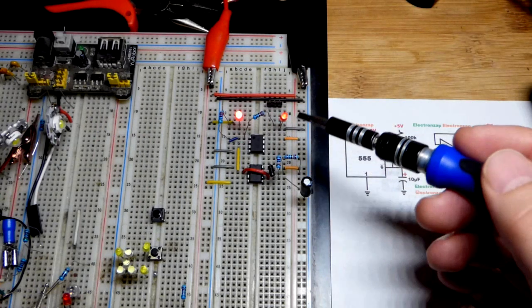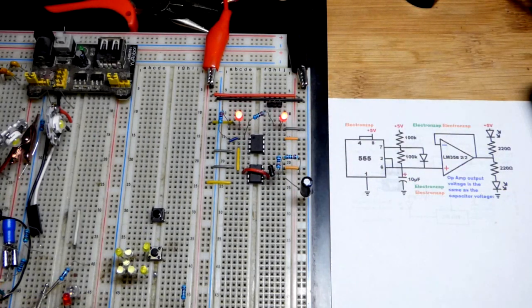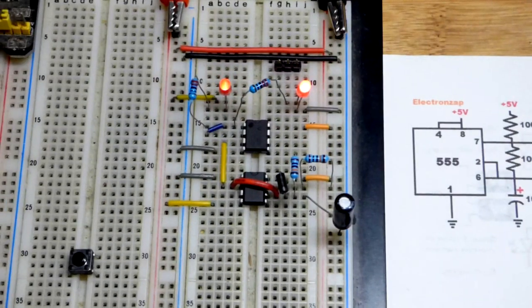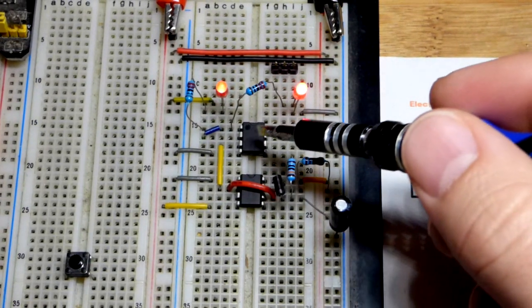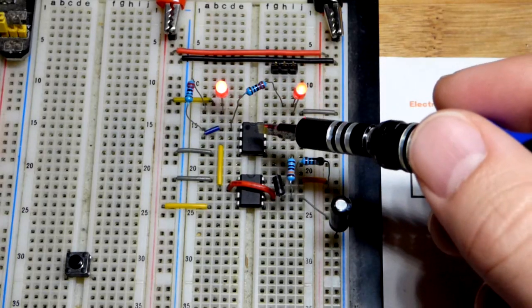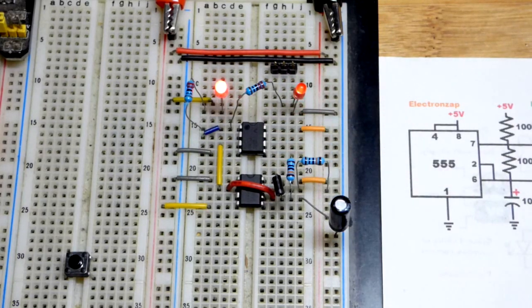So now this is one of my favorite effects that you can make with a simple circuit. We have a 555 timer wired in astable mode and an LM358 op amp as a voltage follower.